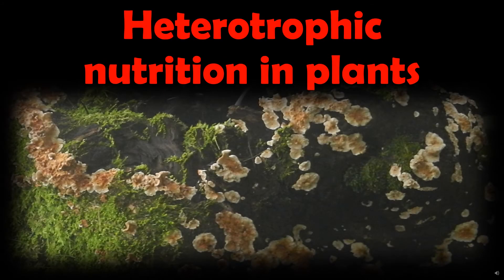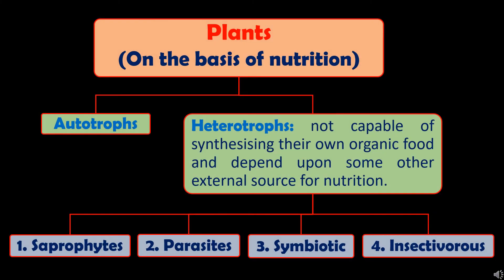Hello friends. Today's video is on Heterotrophic Nutrition in Plants. As we all know, green plants are capable of synthesizing their organic food from simple inorganic materials like carbon dioxide, water and minerals through the process of photosynthesis. Such plants are called autotrophs.